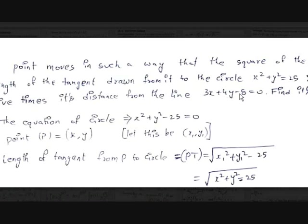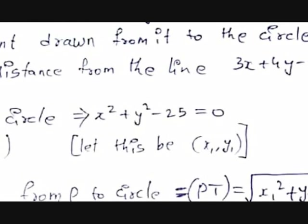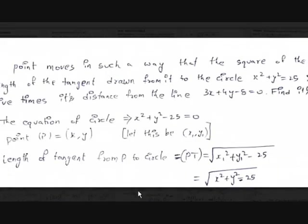The equation of the circle is x²+y²−25=0. The length of the tangent from P to the circle is PT = √(x1²+y1²−25), or equivalently √(x²+y²−25).